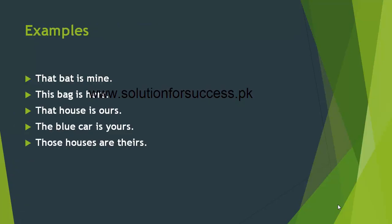Examples دیکھتے ہیں: That bat is mine. — وہ بلہ میرا ہے۔ This bag is hers. — یہ بیگ اس کا ہے۔ That house is ours. — وہ گھر ہمارا ہے۔ The blue car is yours. — نیلی کار تمہاری ہے۔ Those houses are theirs. — وہ مکان ان کے ہیں۔ آپ واضح دیکھ سکتے ہیں کہ یہاں ملکیت کا یعنی possession کا ایک clear sense نظر آتا ہے۔